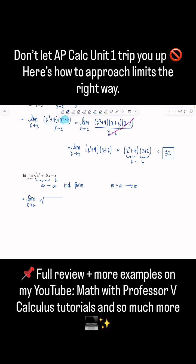So we have square root of x squared plus 18x minus x. And I'm going to multiply all of this by the conjugate, which would be square root of x squared plus 18x plus x. Okay, very good. Same thing top and bottom.